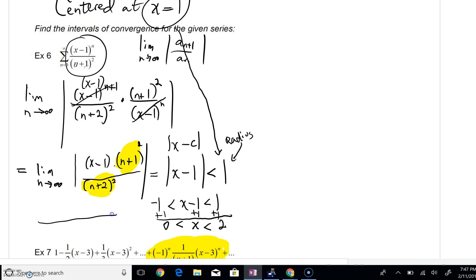If we were to make a number line, and if we were to be here at one, this is where we're centered. You can see we'd move one step to the right, one step to the left. That's where we will get convergence.